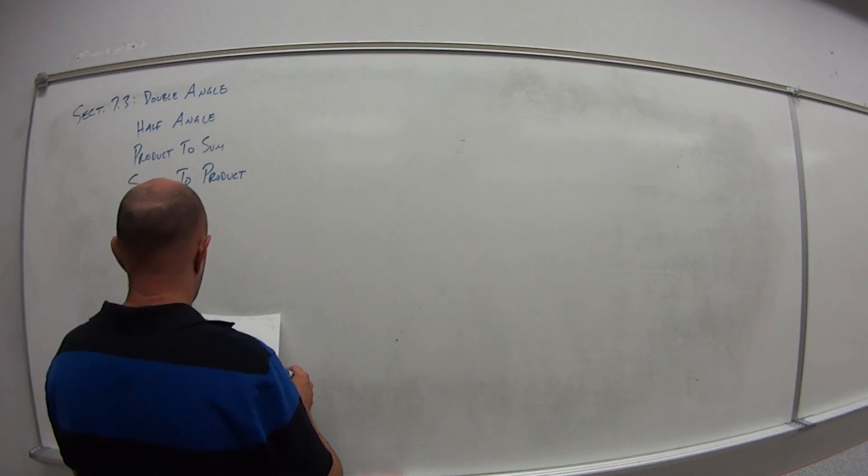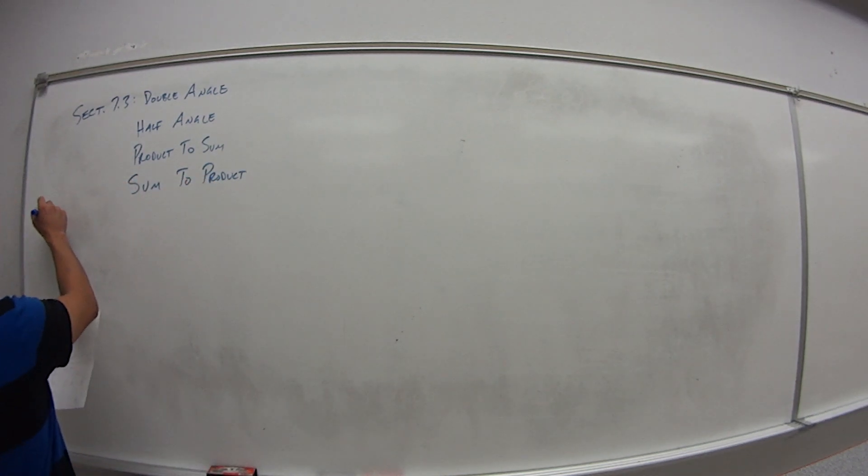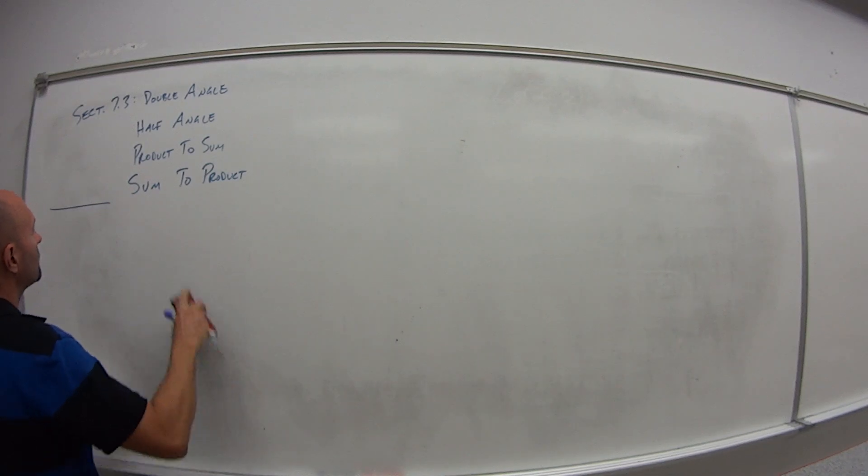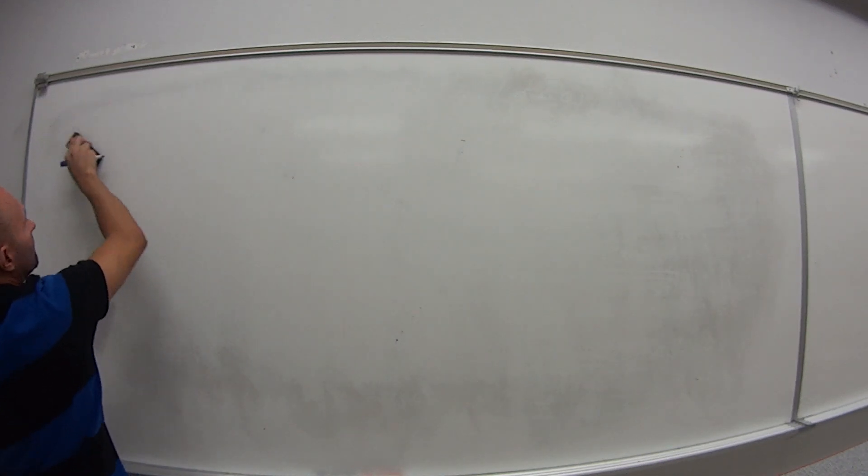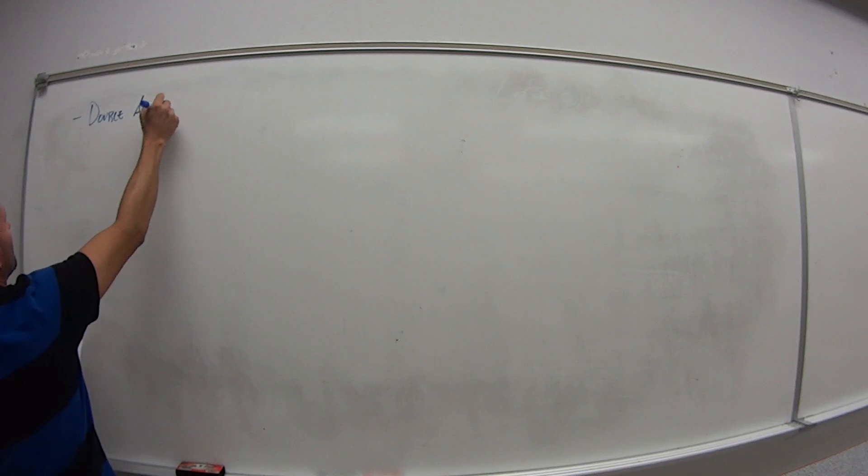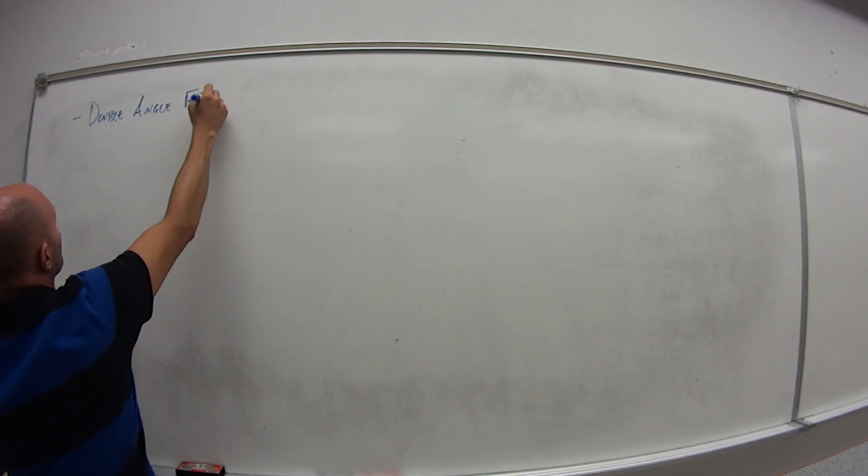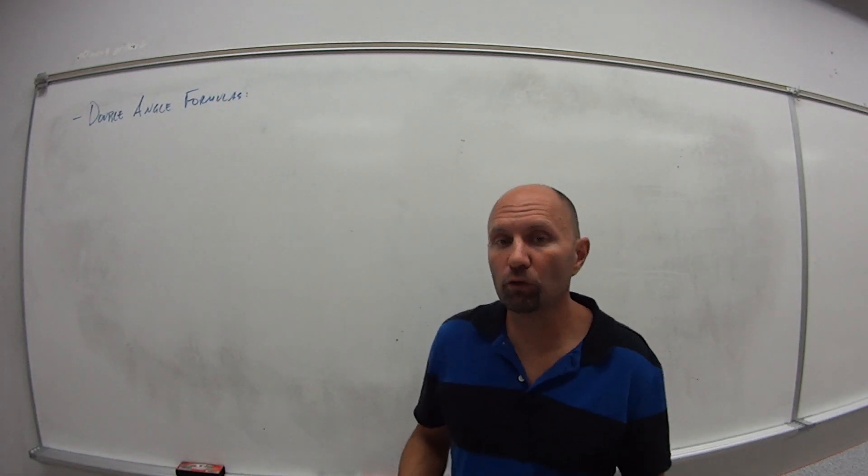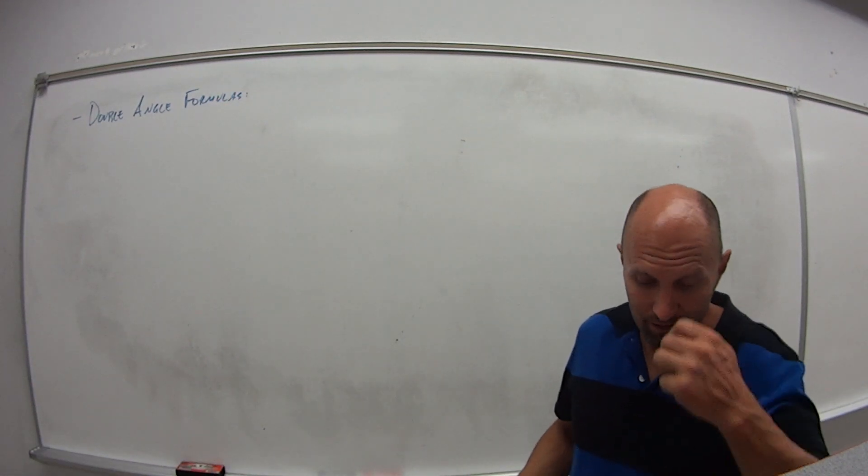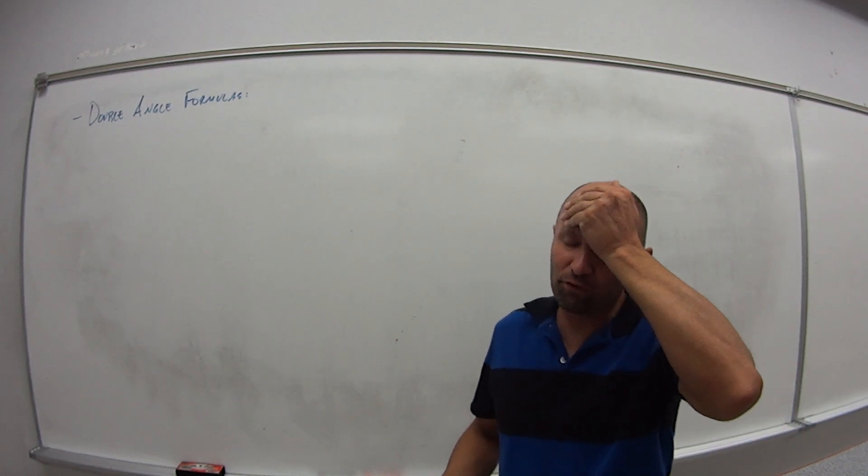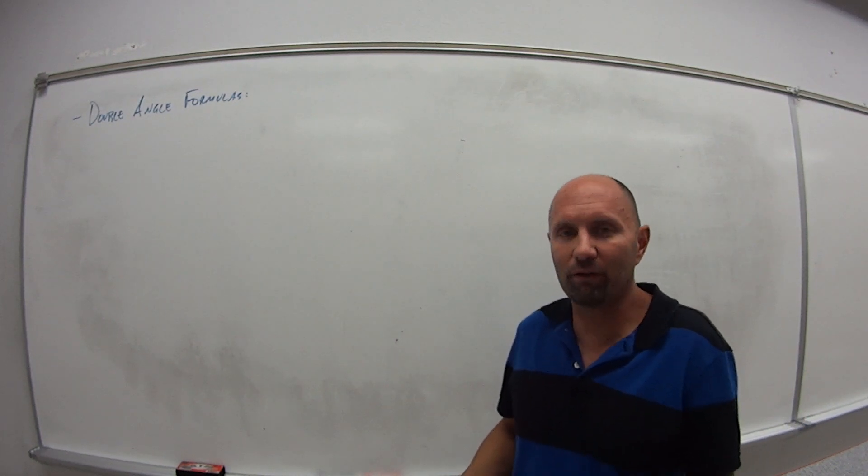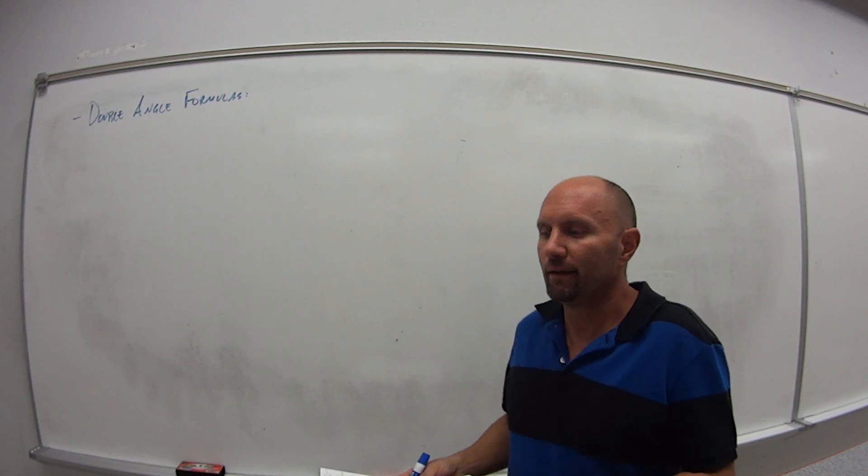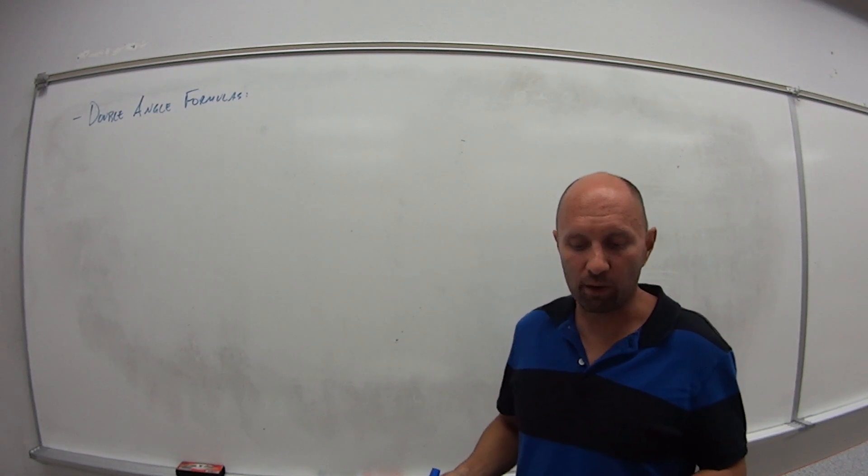So the first one is our double angle formulas. Goes without saying, you will want this on your cheat sheet. And you will definitely want to have these memorized, the double angles for the final. The product to sum, sum to products, I've seen it off and on on the finals.